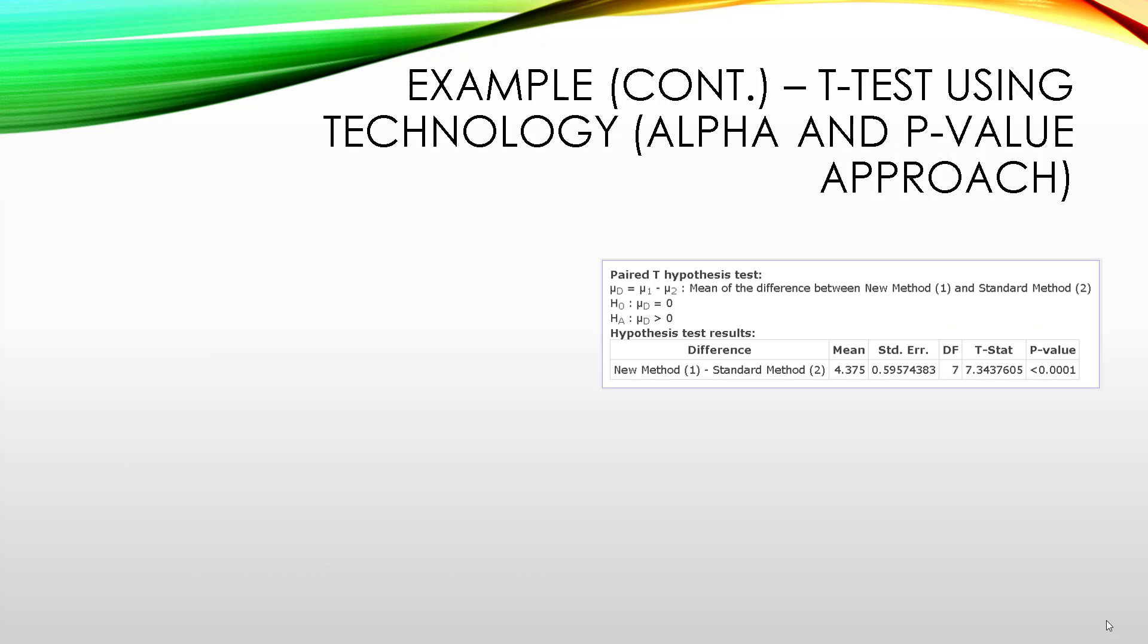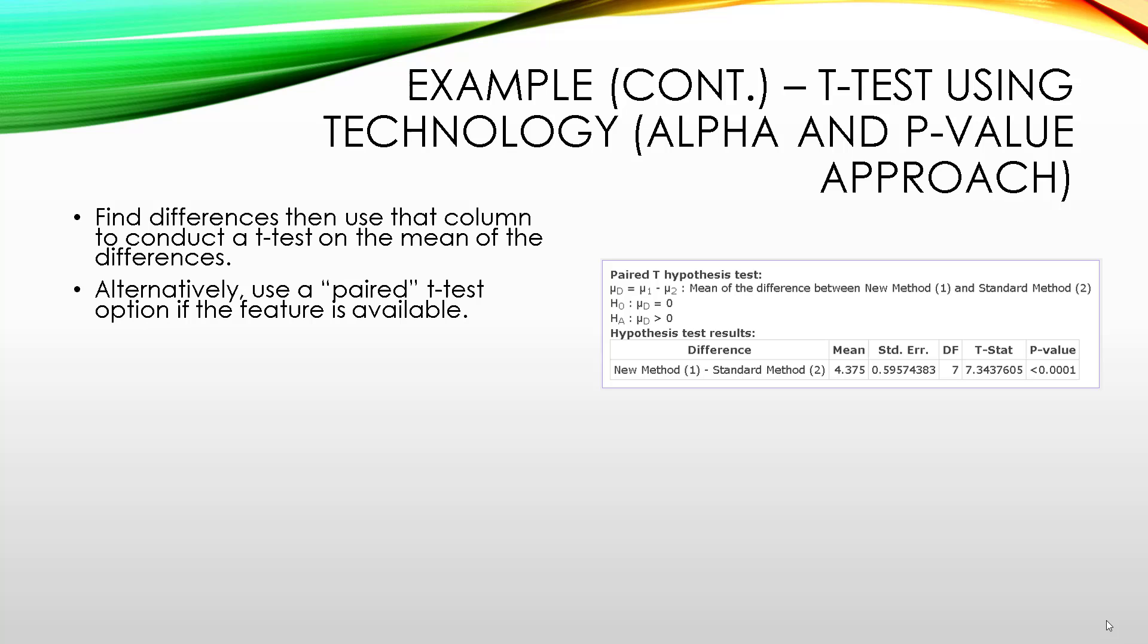Let's approach this again by using technology. So, depending on what software you use, the table that I'm showing here is done using StatCrunch. There are two different ways to do this. One of them is you could actually just calculate the differences. Most software has a feature where you can do mathematical operations on a data table, so just subtract column 1 minus column 2, and just do a standard t-test. Alternatively, in StatCrunch and many other statistical softwares, there is actually an option to do a t-test on differences for a paired sample. Usually it's called paired, but it could be called dependent samples. So, that's how I did this data table. I made sure to select the alternative hypothesis that the mean difference was greater than zero.